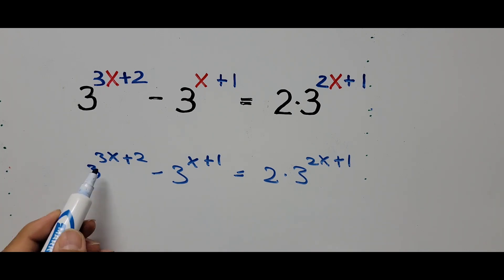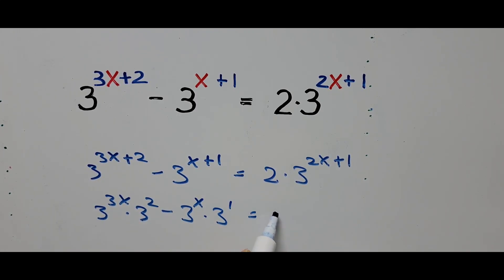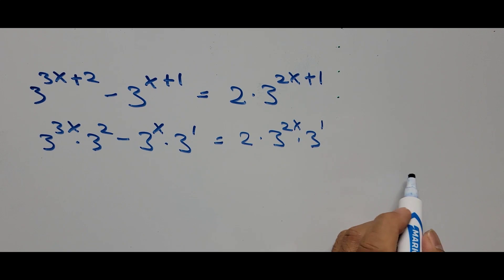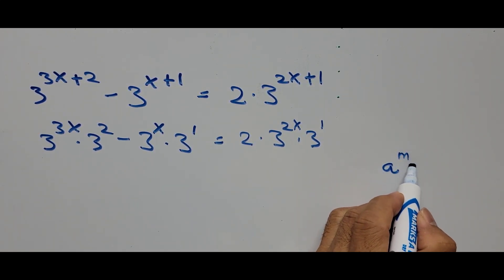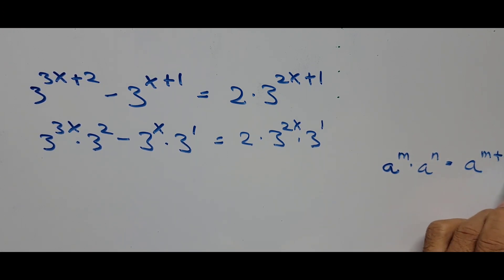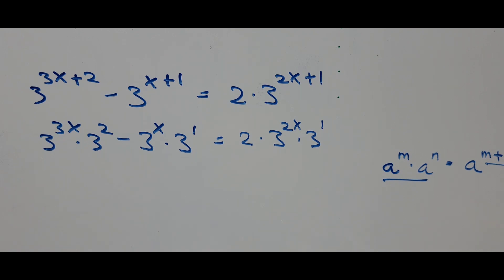The first step is to simplify the exponents. So we get: 3 to the power 3x times 3 to the power 2, minus 3 to the power x times 3 to the power 1, equals 2 times 3 to the power 2x times 3 to the power 1. Here we used the exponent rule: a raised to m times a raised to n equals a raised to m plus n.